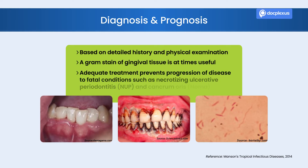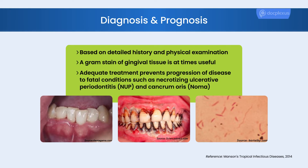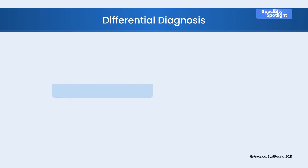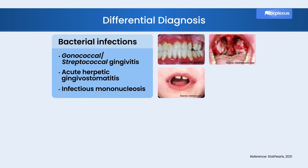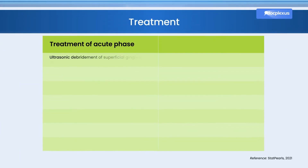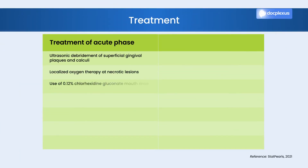Appropriate and timely intervention prevents the advancement of disease into necrotizing ulcerative periodontitis or NOMA. ANUG can be easily confused with infections like gonococcal or streptococcal gingivitis and mucocutaneous conditions like desquamative gingivitis. In the case of HIV-infected patients, clinicians must consider ANUG even if the CD4+ T lymphocytes are stable. ANUG poses a diagnostic dilemma to clinicians.